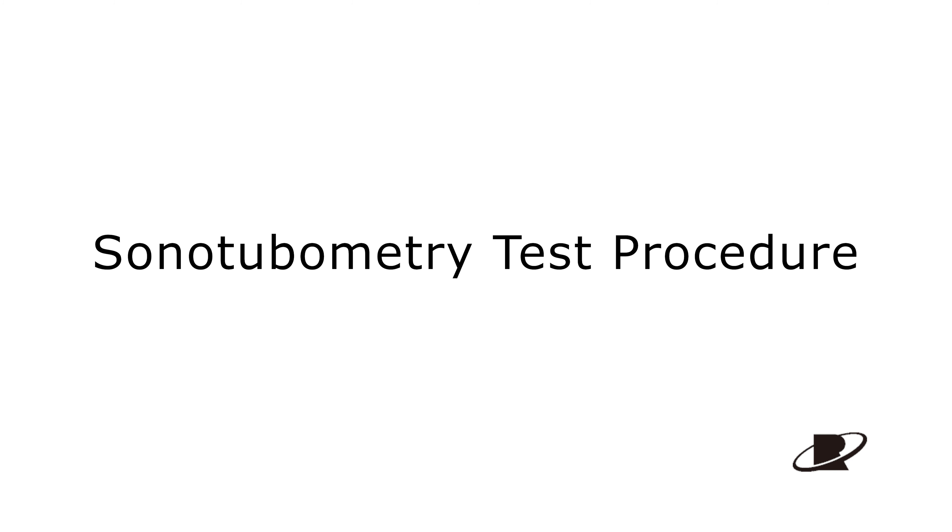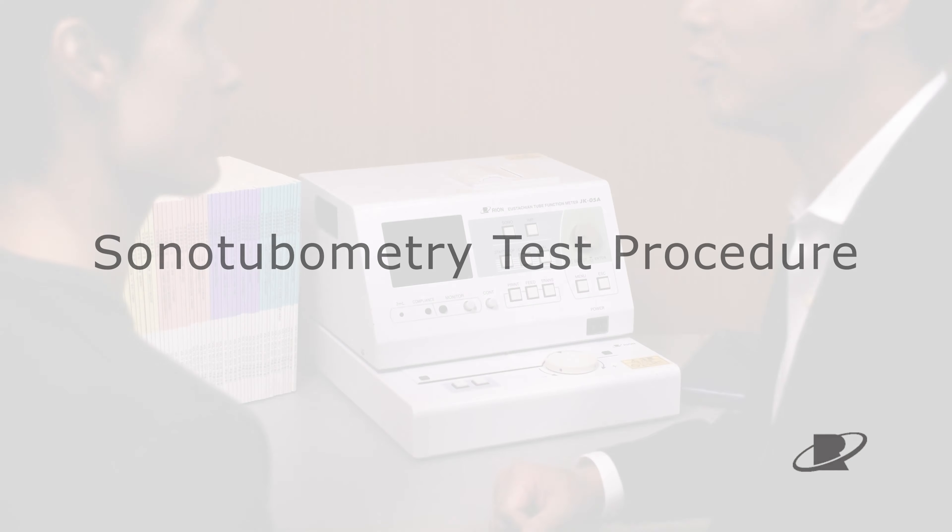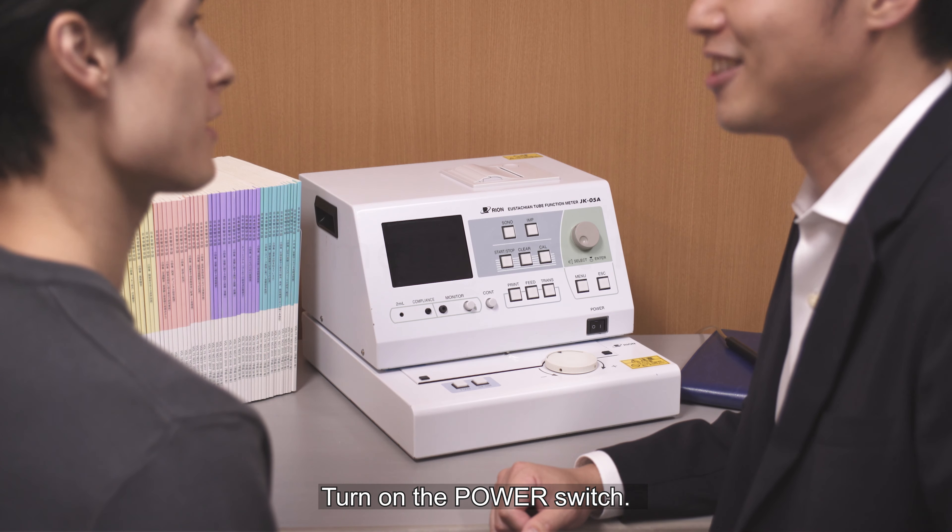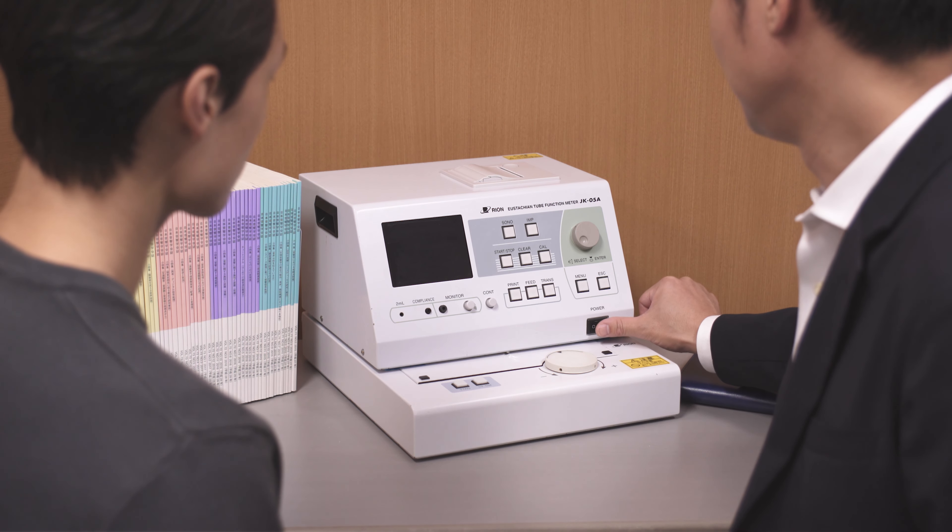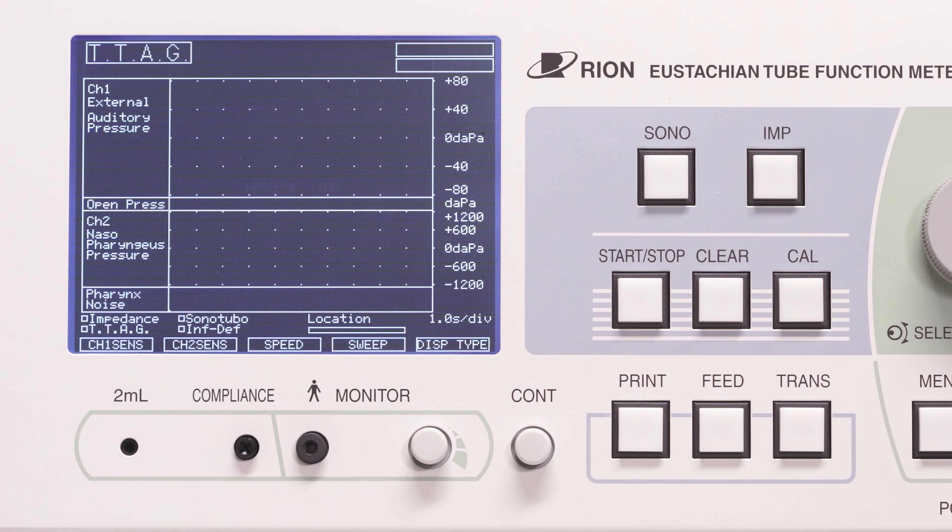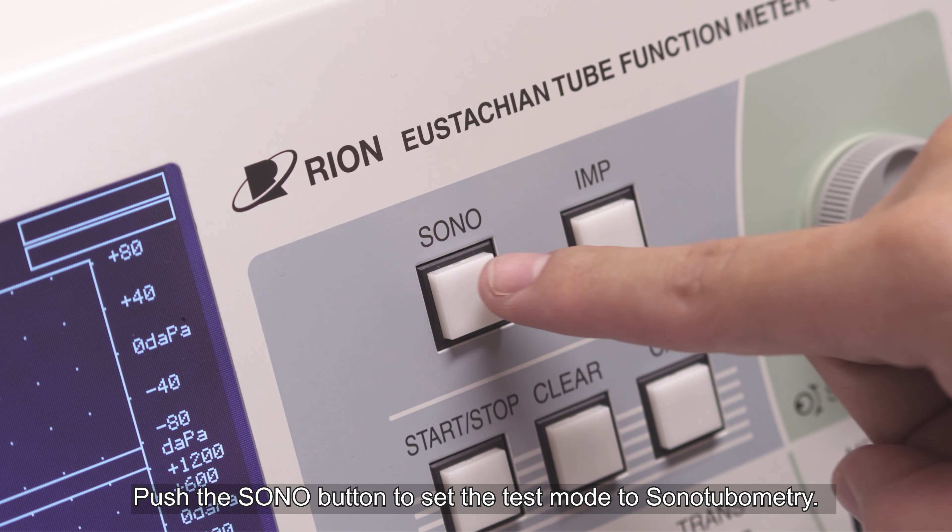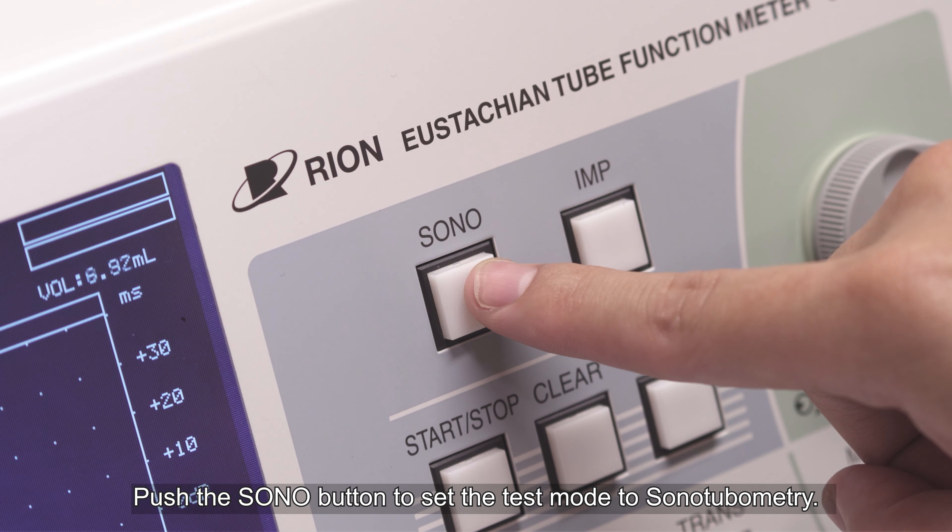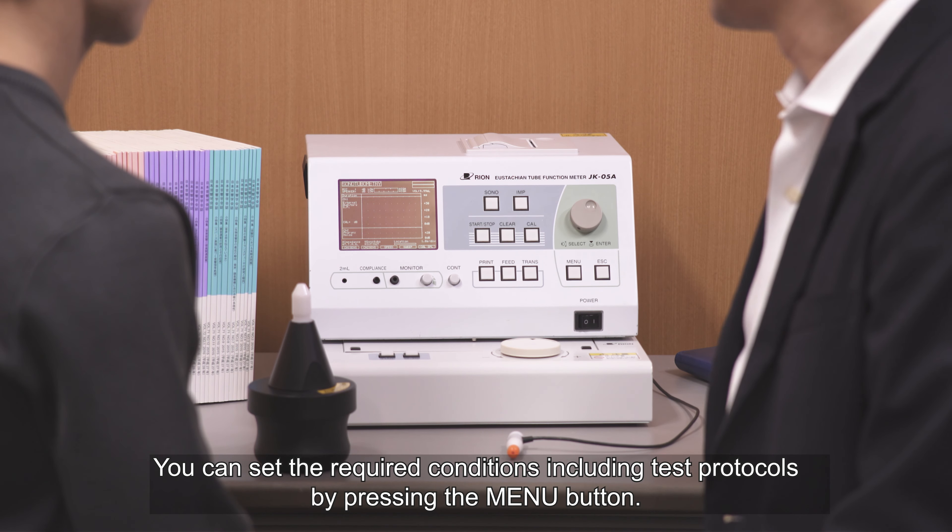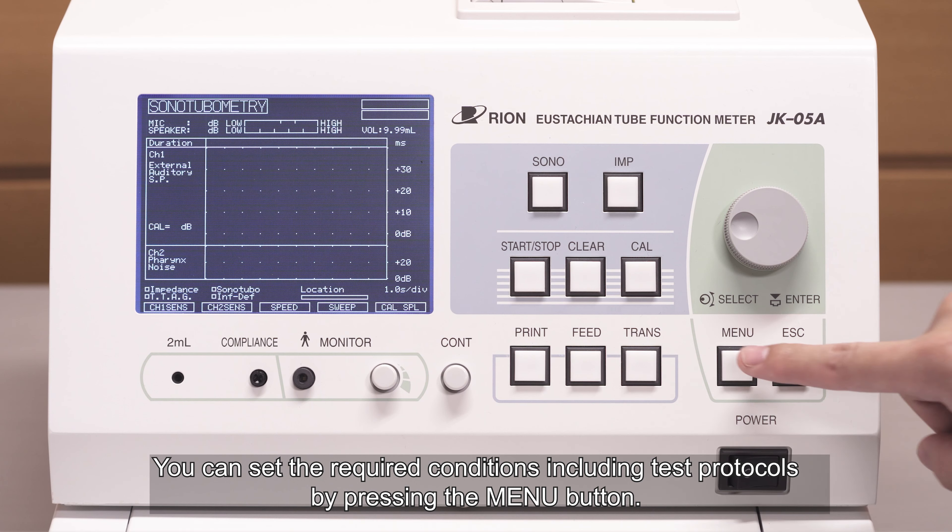This section will demonstrate the full test procedure. Turn on the power switch. Push the SONO button to set the test mode to sonotubometry. You can set the required conditions, including test protocols, by pressing the MENU button.